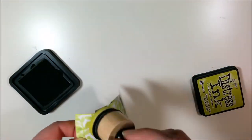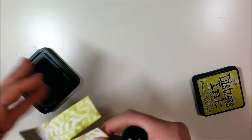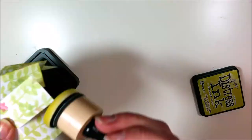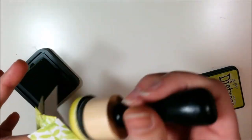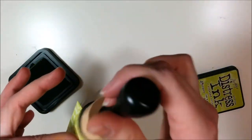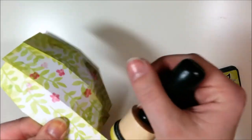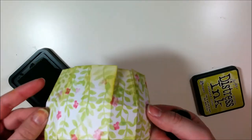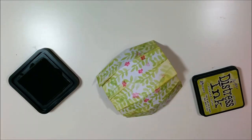By the way, all the cardstock that I'm using is from a Die Cuts with a View stack. It's called Melon Twist. It's one of my favorite spring, summery stacks. The colors are beautiful. They're pink, green, blues. They're perfect especially for Easter. It's a really nice stack.